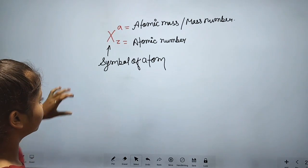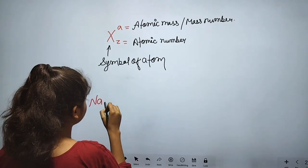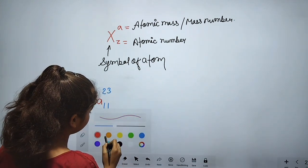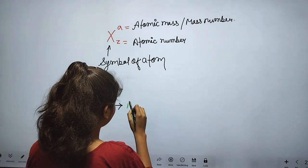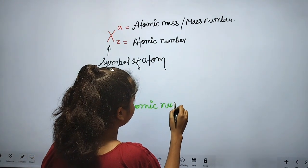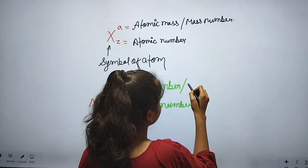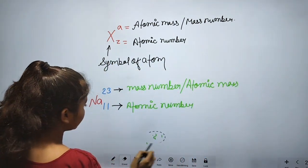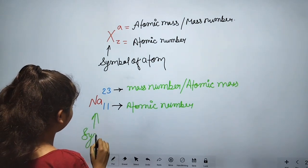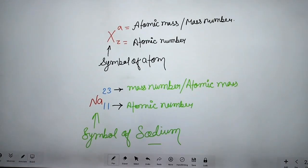Let's see some examples. For sodium (Na), the atomic number is 11 and the mass number is 23. The lower number is the atomic number and the upper one is the mass number or atomic mass, and Na is the symbol of sodium. In the same way there are many elements like helium, lithium, beryllium, and so on.